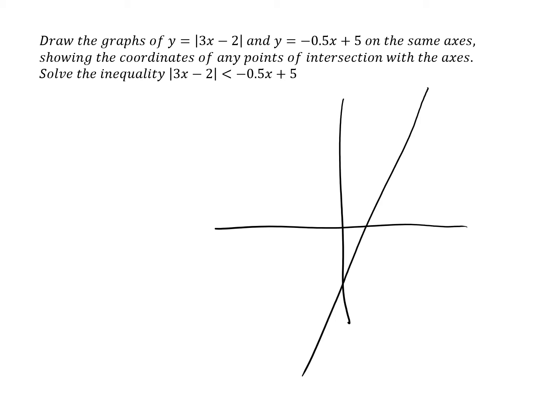A gradient of 3, and the y-intercept of minus 2 here. And so this would be where y equals 0, x equals 2 thirds.